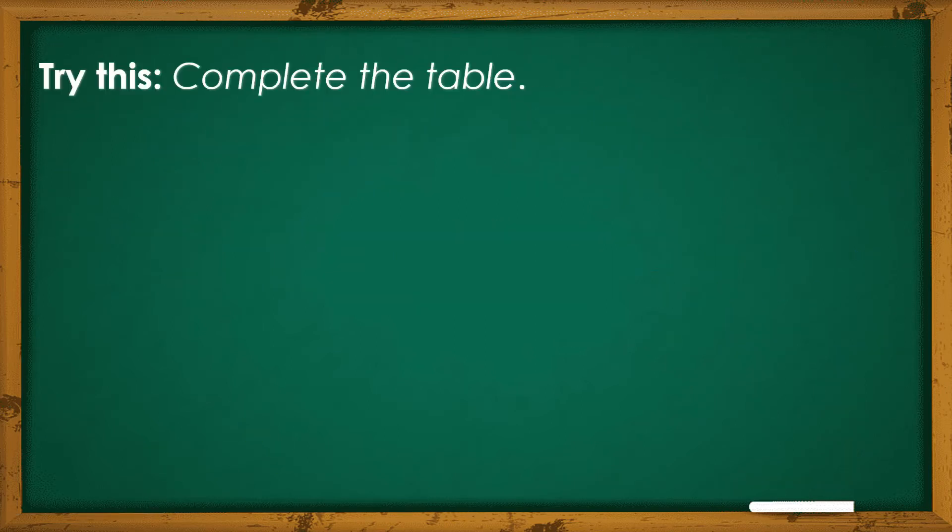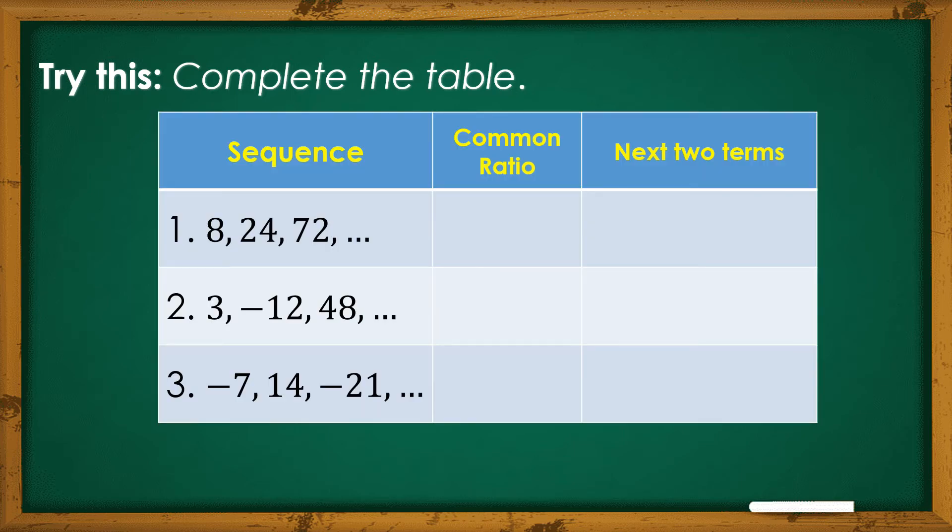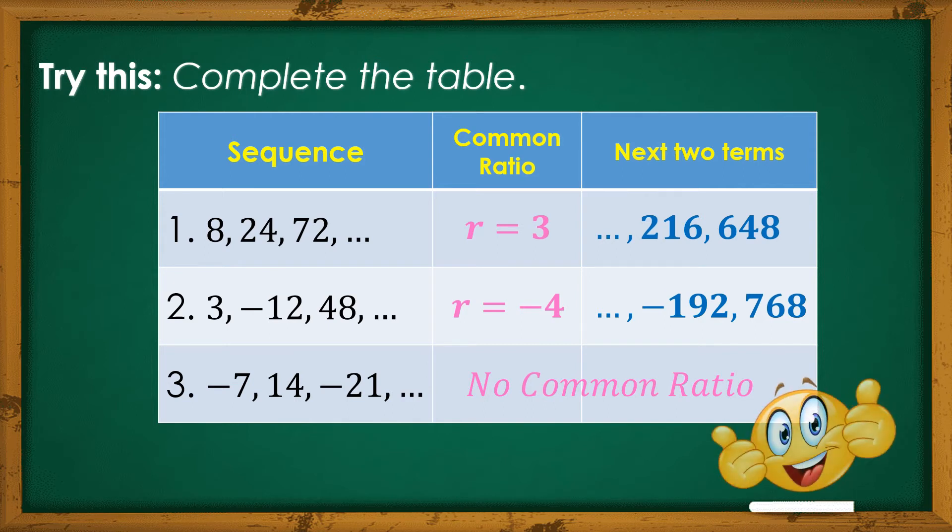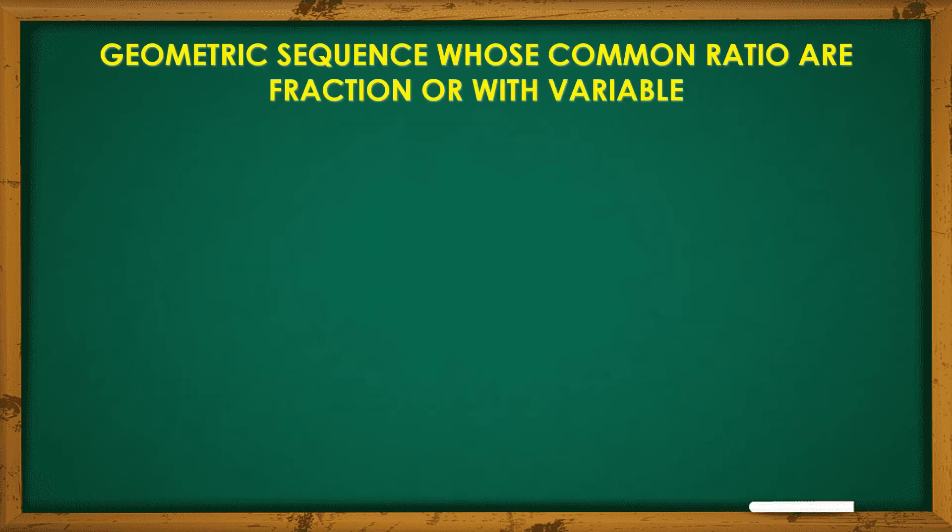Now, it's your turn. Try to complete the table. Given the sequence, bigay nyo yung common ratio at yung next two terms ng bawat geometric sequence. Did you get the same answers? Observe number 3. Nikita natin that it has no common ratio. Therefore, it's not a geometric sequence. Very good! Now, let's have more examples of geometric sequence and its common ratio.